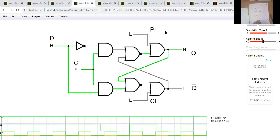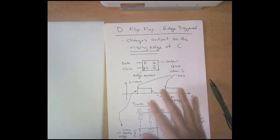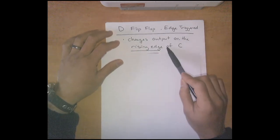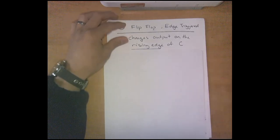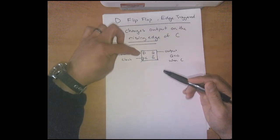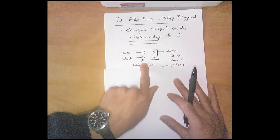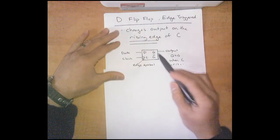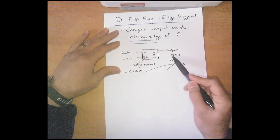Now let's start the new material: the edge-triggered flip-flop. The key point is that it changes the output Q only on the rising edge of the clock — similar to interrupts, where only the rising edge matters, not the absolute level. You still have a data line and a clock, but notice the little caret symbol indicating edge-sensitivity. The key rule: Q equals the data when the clock rises. That's it.